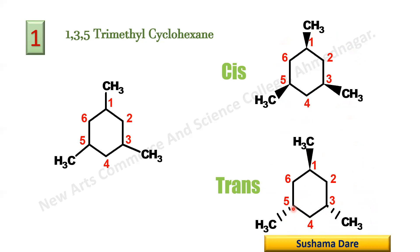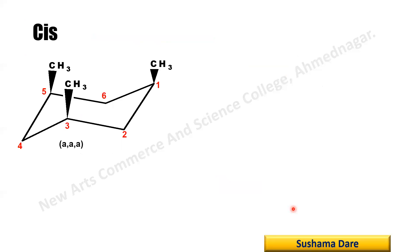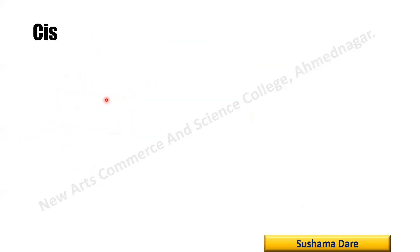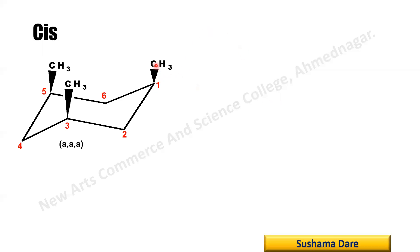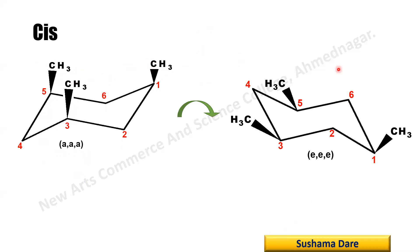Now let us draw this in a chair structure — starting with the cis one. Draw the chair conformer, number it 1 through 6. In the previous planar structure, all methyl groups face upward. In the chair: C1-CH3 upper direction is axial, C3-CH3 upper direction is axial, and C5-CH3 upper direction is axial. So the name of this conformer is AAA — and this is a highly unstable structure because there are a lot of steric interactions. So this ring flips into another conformer.